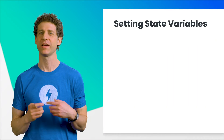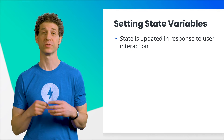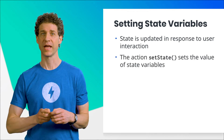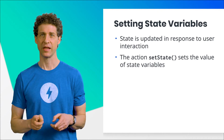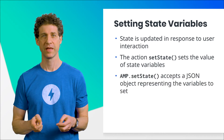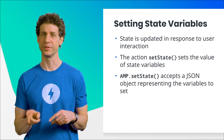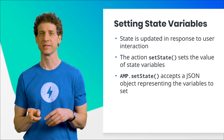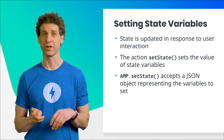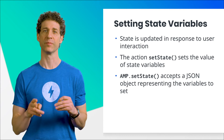So how do we create a state variable or update its value? In AMP, we respond to what the user does through events and actions. The AMP runtime provides an action called setState that allows us to set the value of state variables. This amp.setState action takes as an argument a JSON object. That object contains the state variables that need to be updated. The object's keys are the names of the state variables, and its values are the state variable's values.